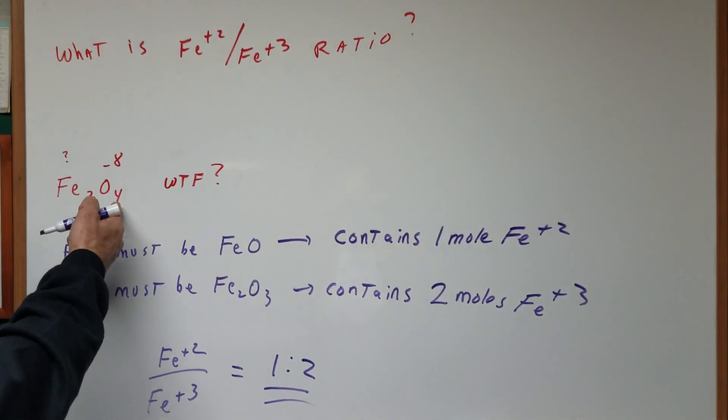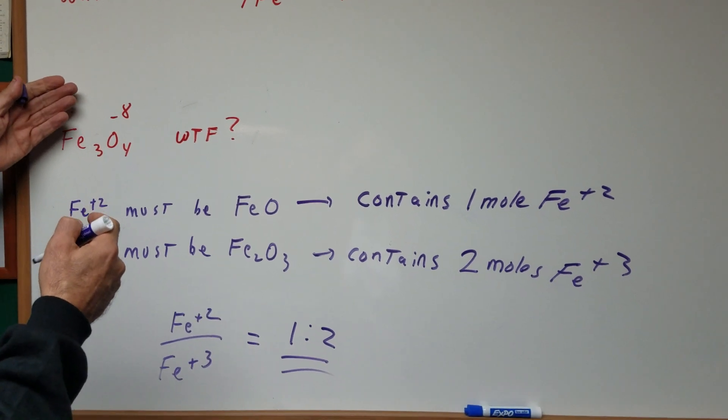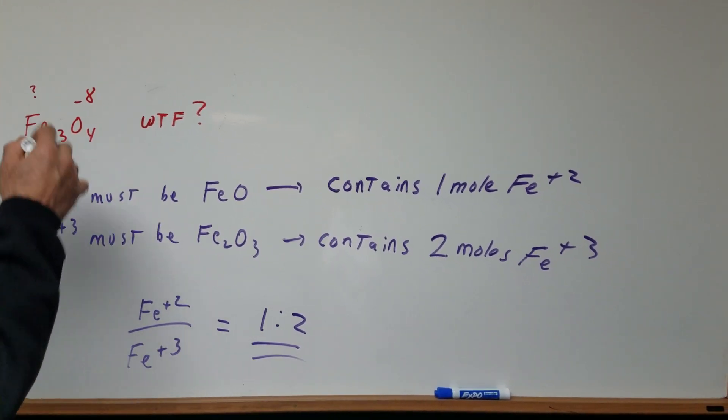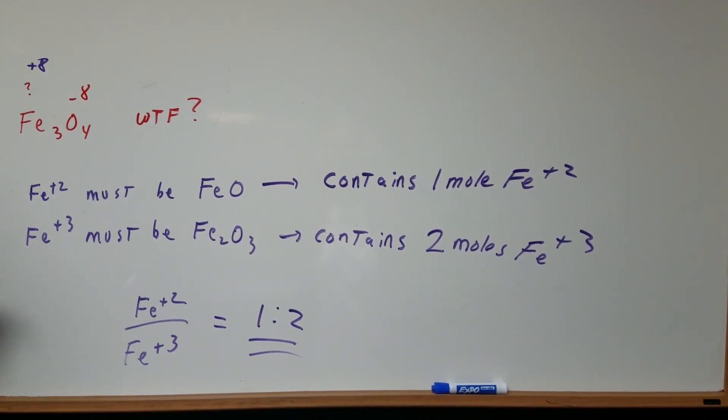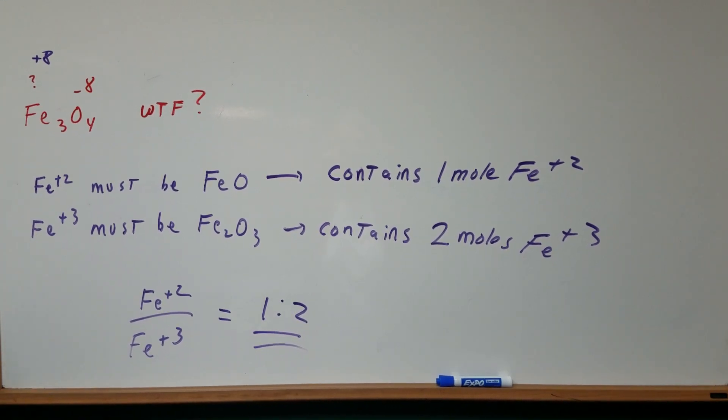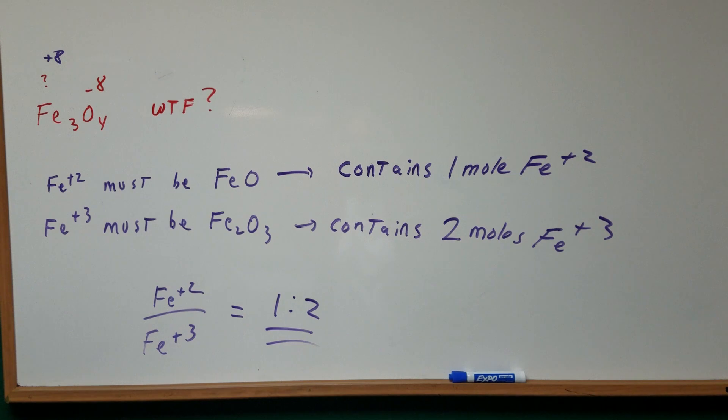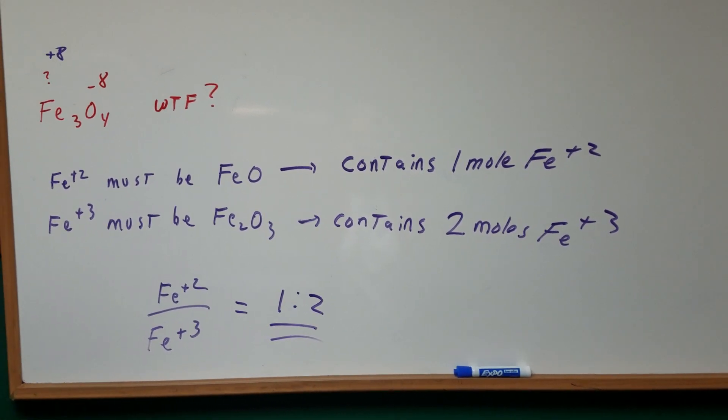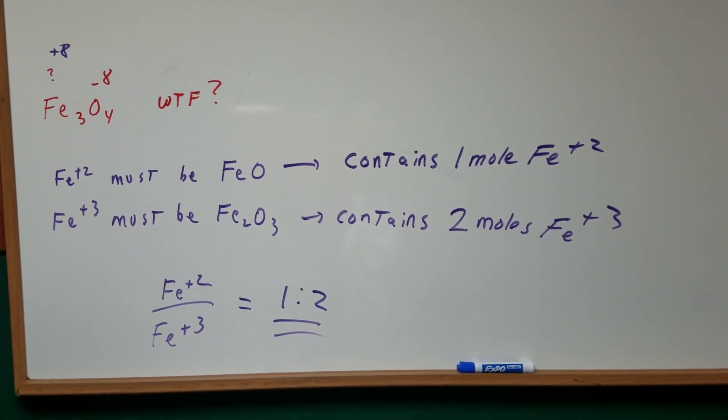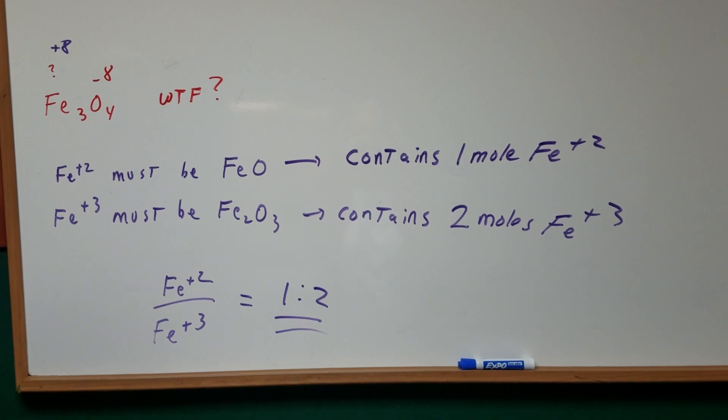Each oxygen is minus 2 and there's four of them so that's a minus 8. So you would say to yourself well this is plus 8 but there's three of them. So how can that be possible? How can three of them be equal to plus 8? You can't have an odd or an integral charge. Well the first thing you would do is...